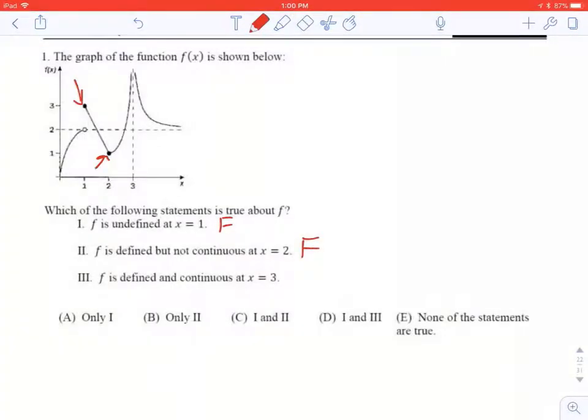f is defined and continuous at x equals 3. Both of those are wrong. The vertical asymptote here at 3, it's not continuous there. Those are both false. So the only answer could be E.